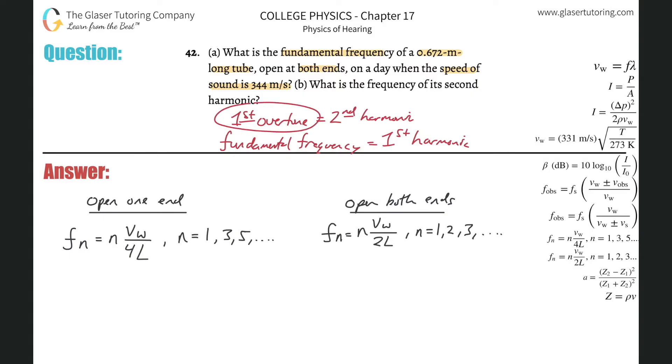So if the first overtone is the second harmonic, guess what the second overtone will be? The third harmonic. And the third overtone would be the fourth harmonic, right? Et cetera, et cetera. So probably refer you guys back to this video for later problems.